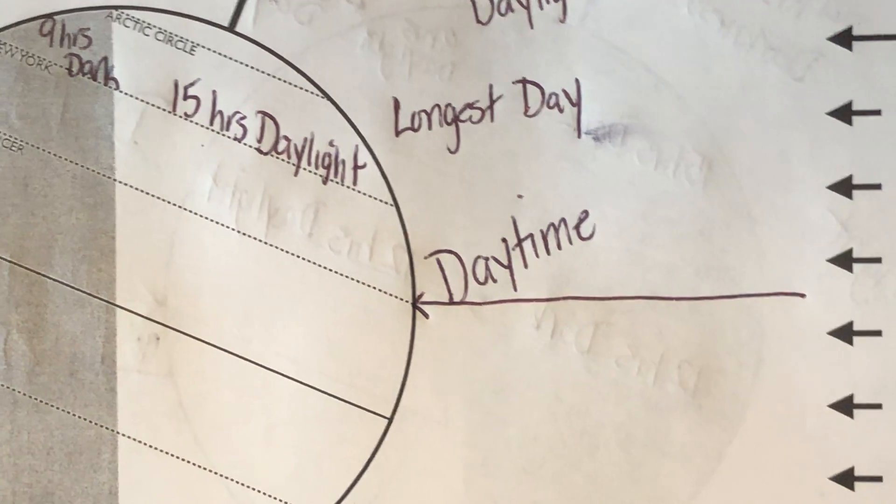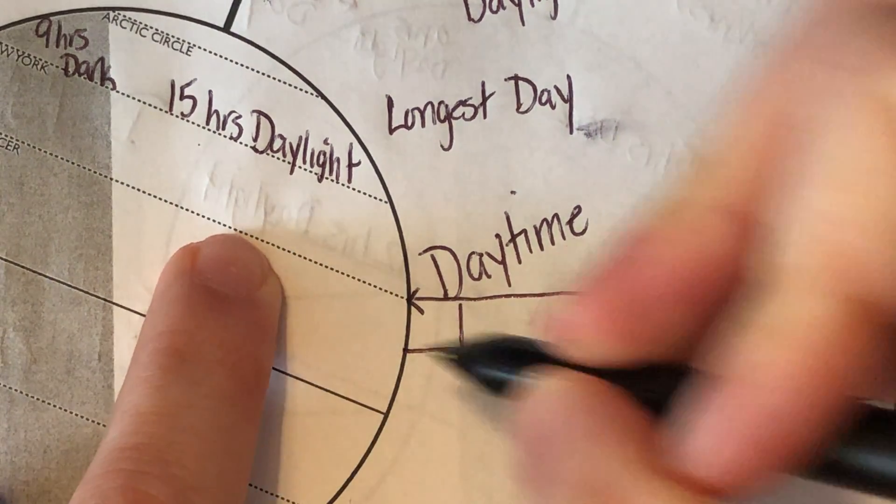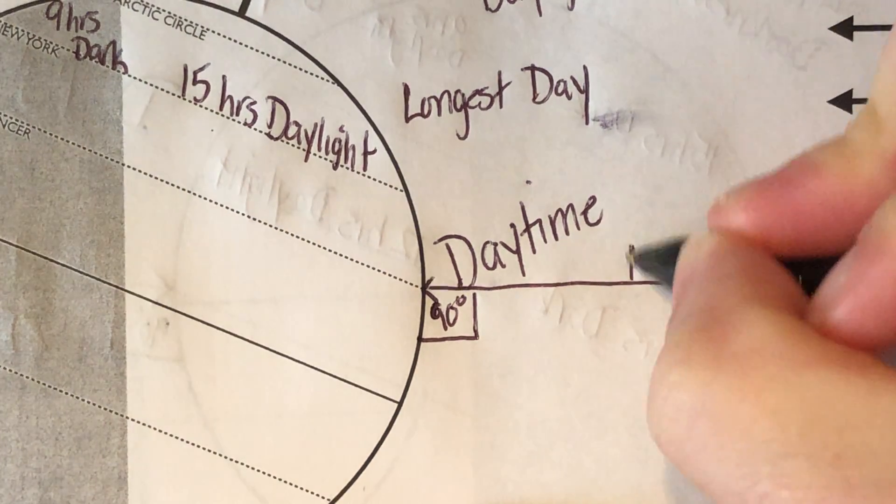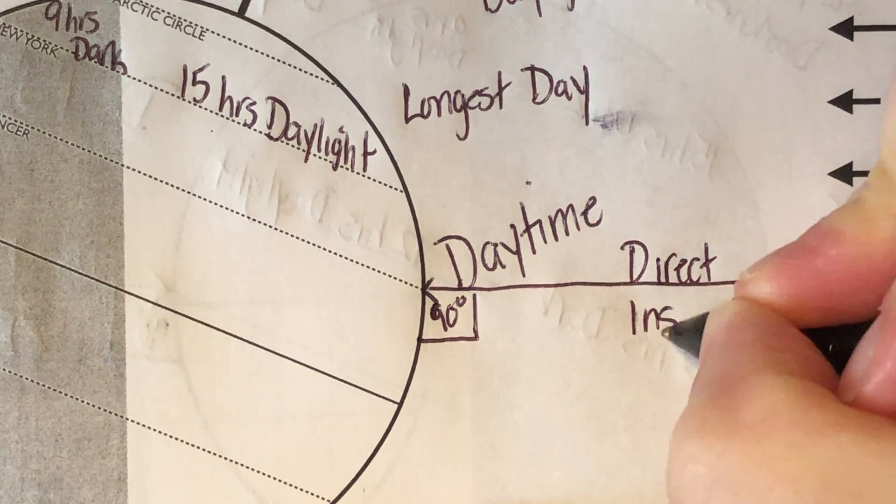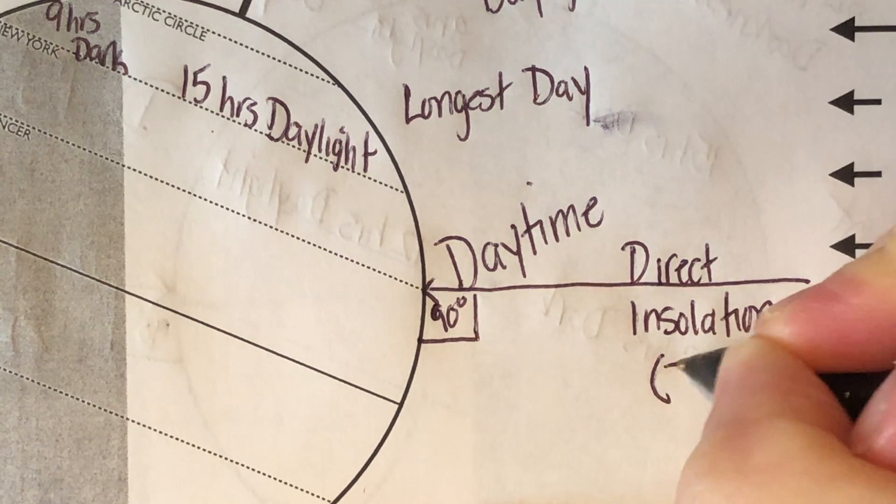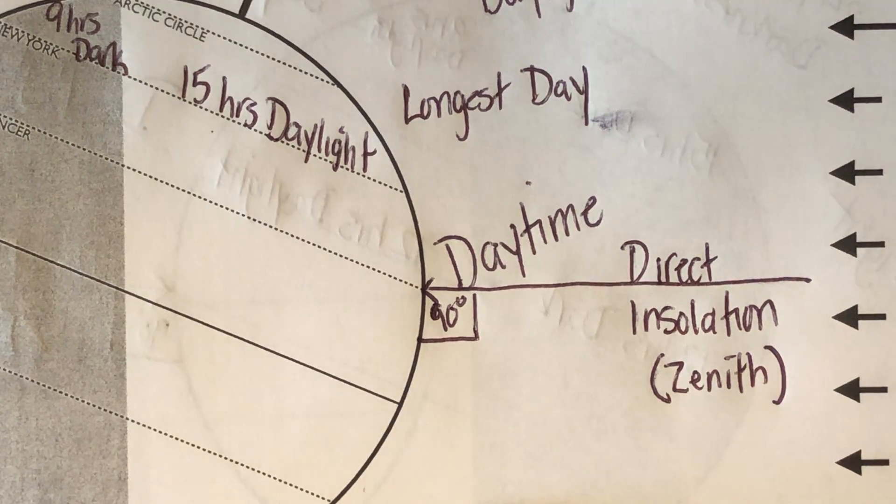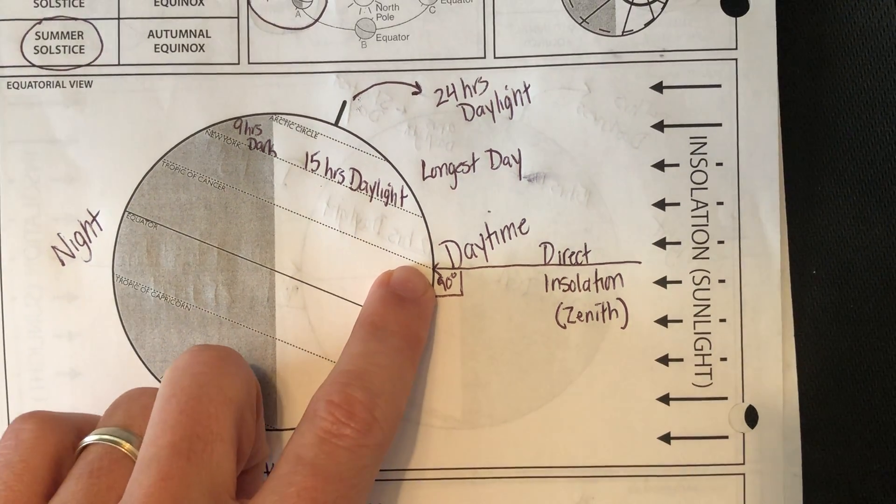That arrow right there represents a photon of light, a beam of light, hitting the Tropic of Cancer at 90 degrees. That just means that you're going to get direct insolation, which just means that the sun is going to be at the zenith. The sun is overhead, the sun's highest point above the observer at the Tropic of Cancer on June 21st.